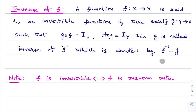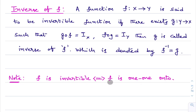One very important point: based on inverse of a function, we have one 5-mark question — 100% guarantee. In exercise 1.3, related to inverse of a function, there are 5 problems total. A function is invertible if and only if f is one-one and onto, meaning f is a bijective function. If f is bijective then it is invertible, and if f is invertible then it is bijective.